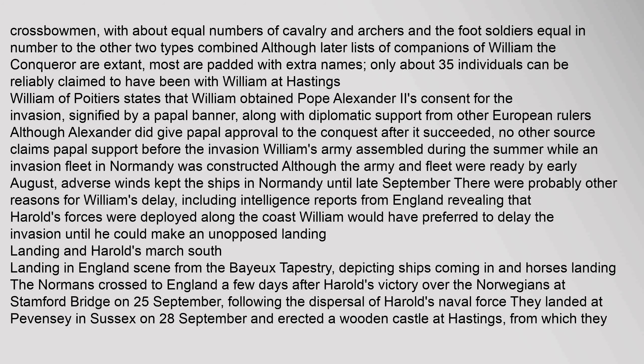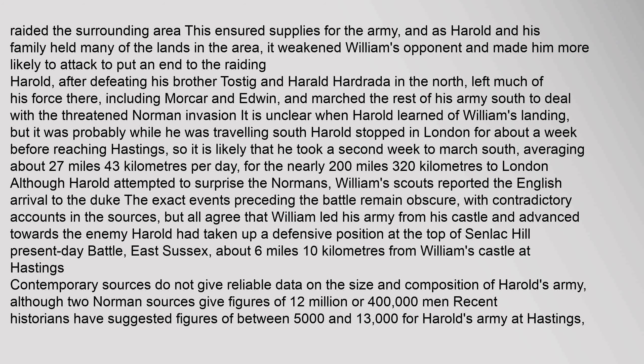The Normans crossed to England a few days after Harold's victory over the Norwegians at Stamford Bridge on 25 September, following the dispersal of Harold's naval force. They landed at Pevensey in Sussex on 28 September and erected a wooden castle at Hastings, from which they raided the surrounding area. This insured supplies for the army, and as Harold and his family held many of the lands in the area, it weakened William's opponent and made him more likely to attack to put an end to the raiding. Harold, after defeating his brother Tostig and Harold Hardrada in the north, left much of his force there, including Morcar and Edwin, and marched the rest of his army south to deal with the threatened Norman invasion.